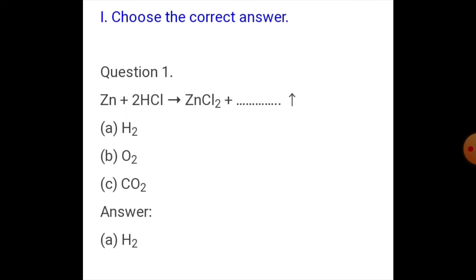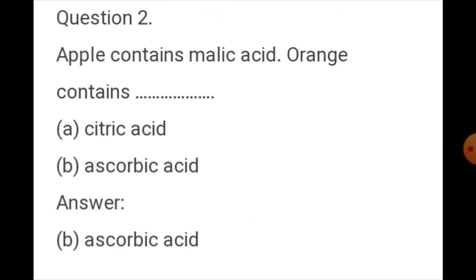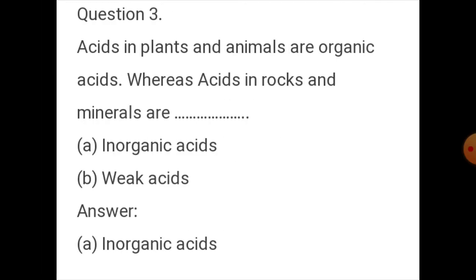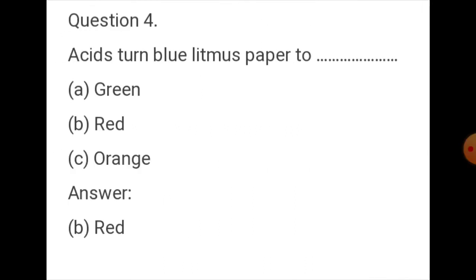Choose the correct answer. Question one: Zn plus 2HCl gives ZnCl2 plus H2 gas. Question two: Apple contains malic acid; orange contains ascorbic acid. Question three: Acid in plants and animals is organic acid, whereas the acid in rocks and minerals is inorganic acid.